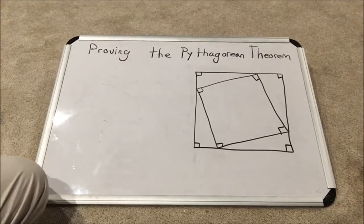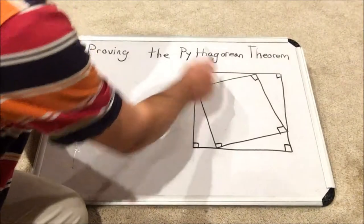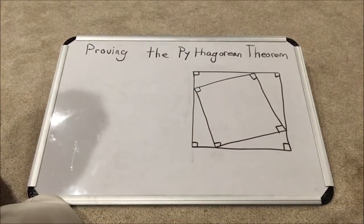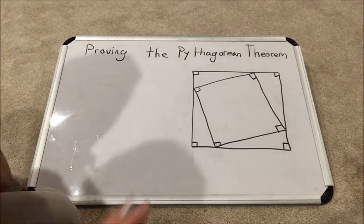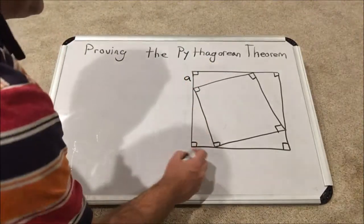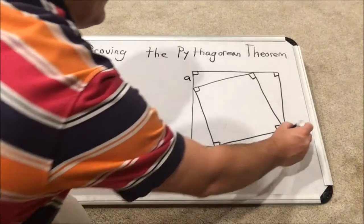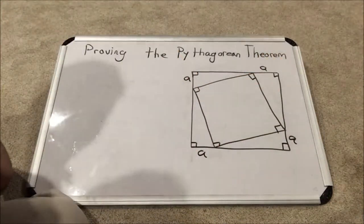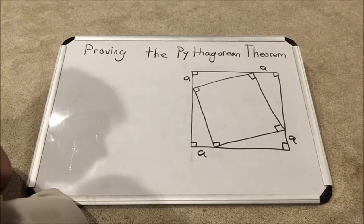How is this useful to us? Well it creates a bunch of right triangles. Now here's how we're going to very sneakily label the sides. The short side of each of these little triangles I'm going to call A. The larger side, rather the larger leg of each of these triangles, I'm going to call B.